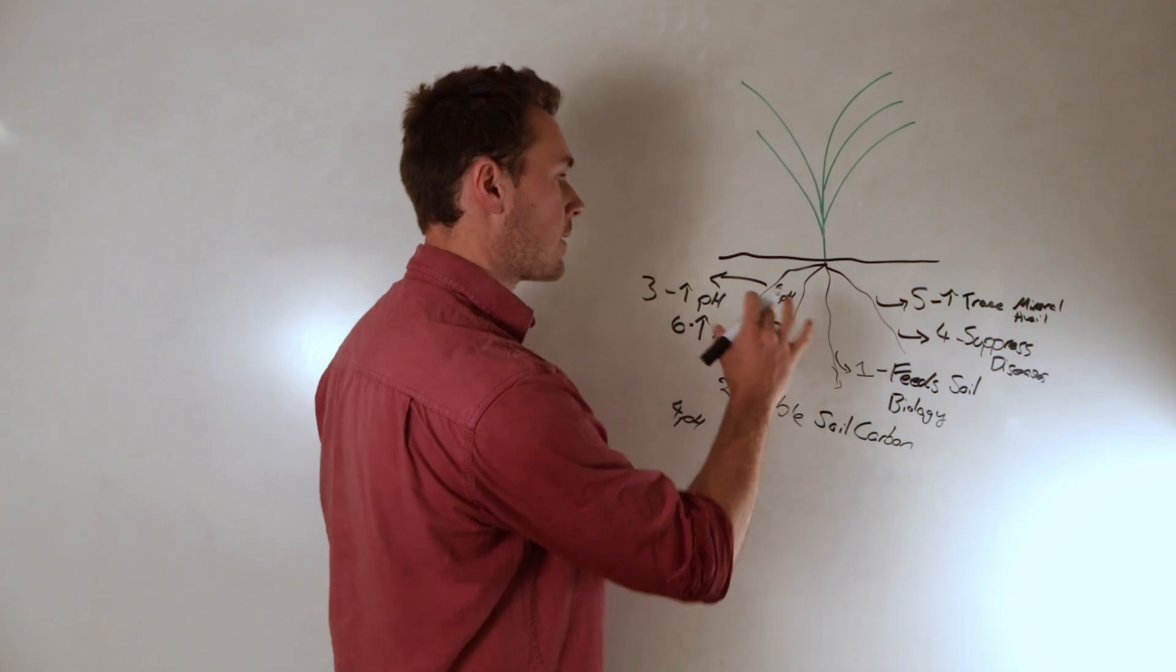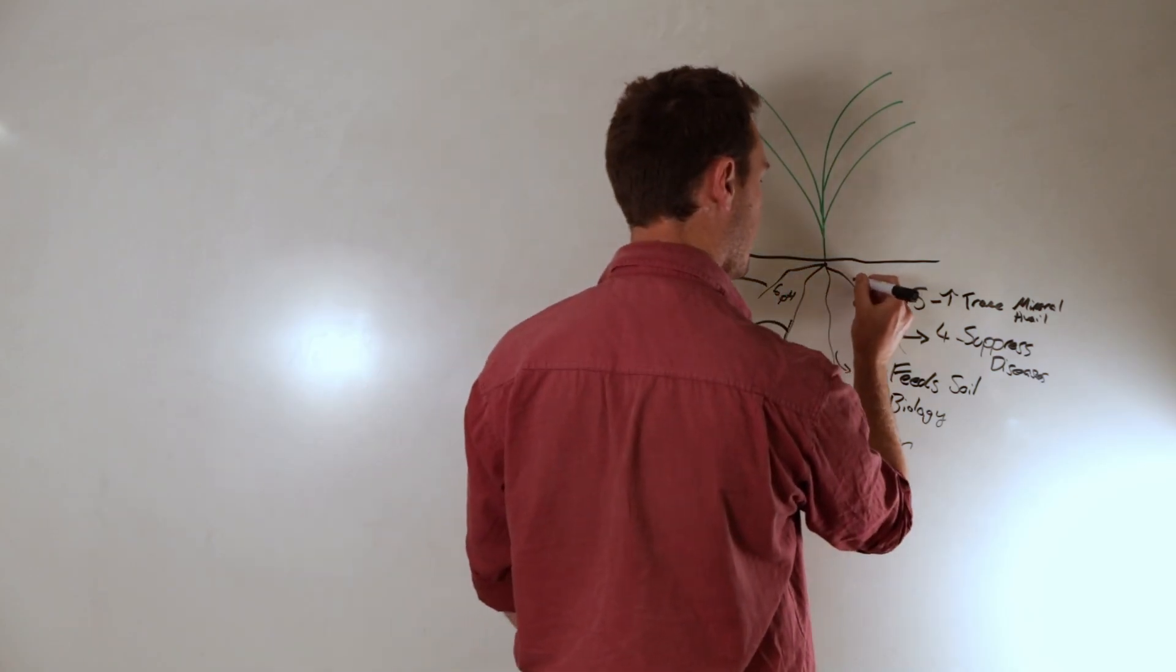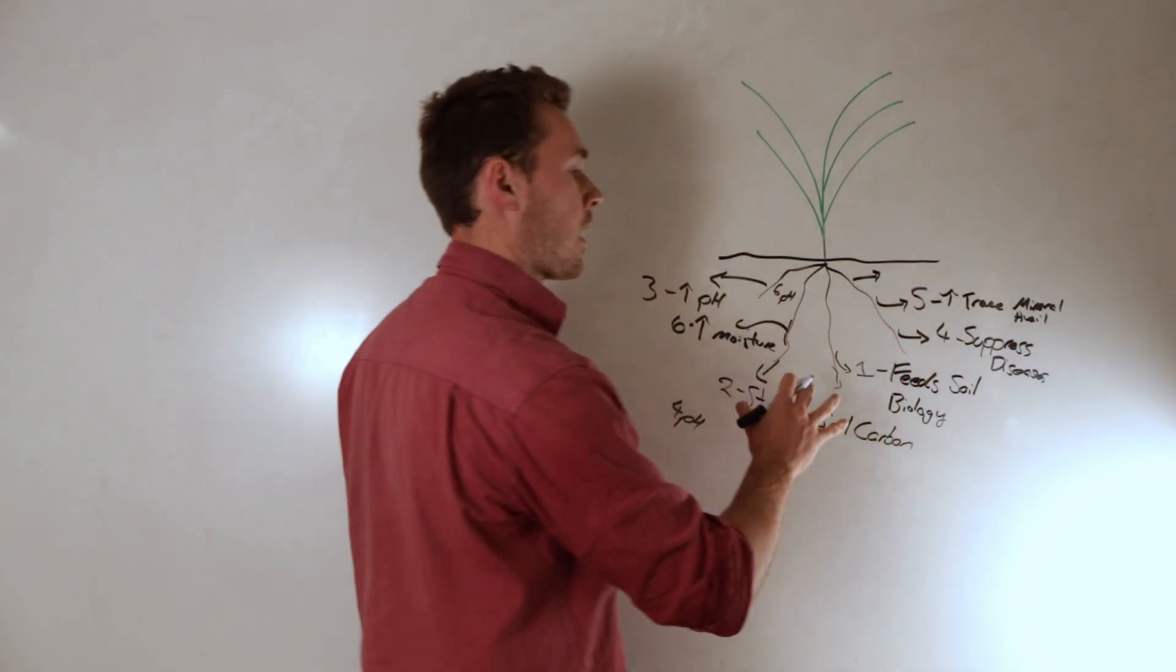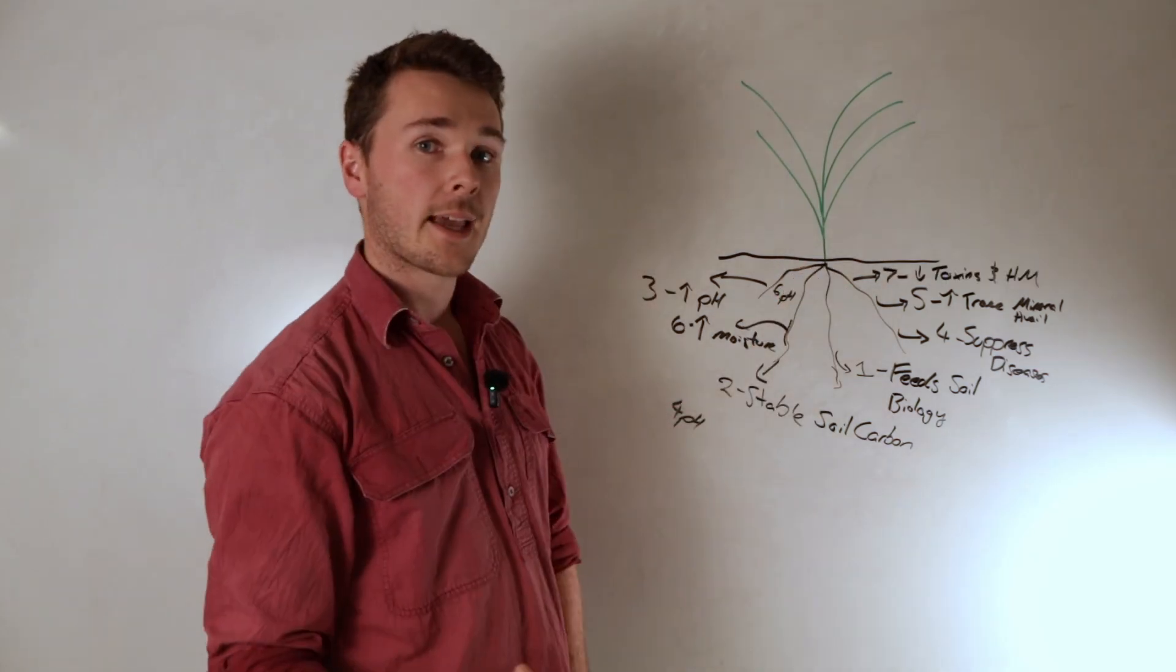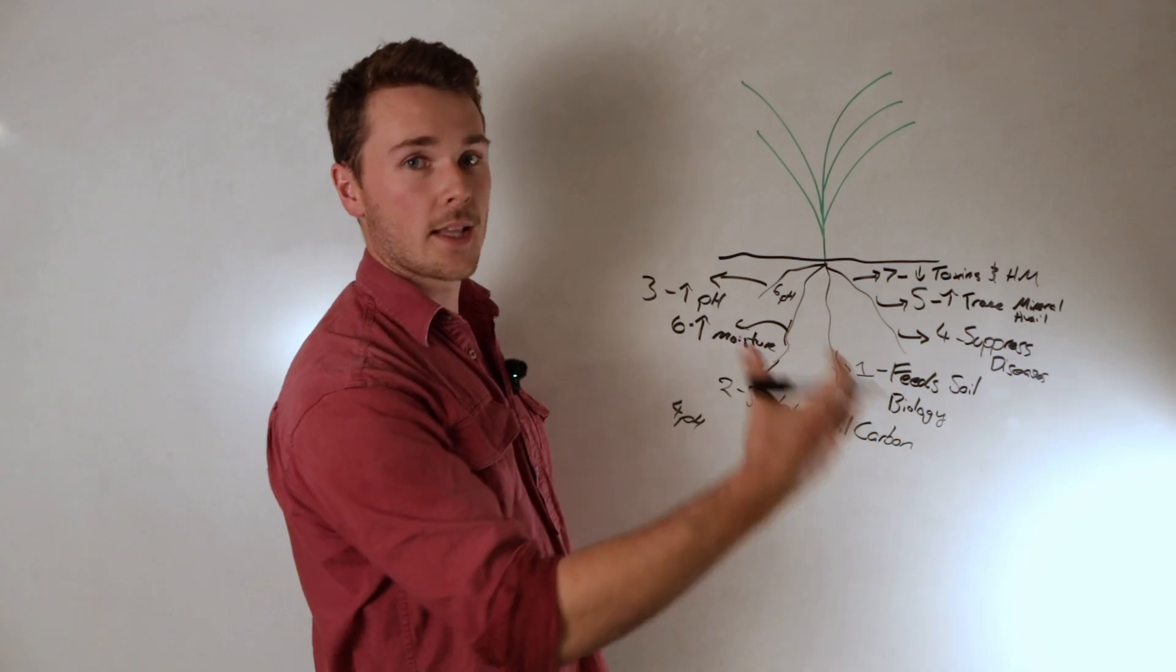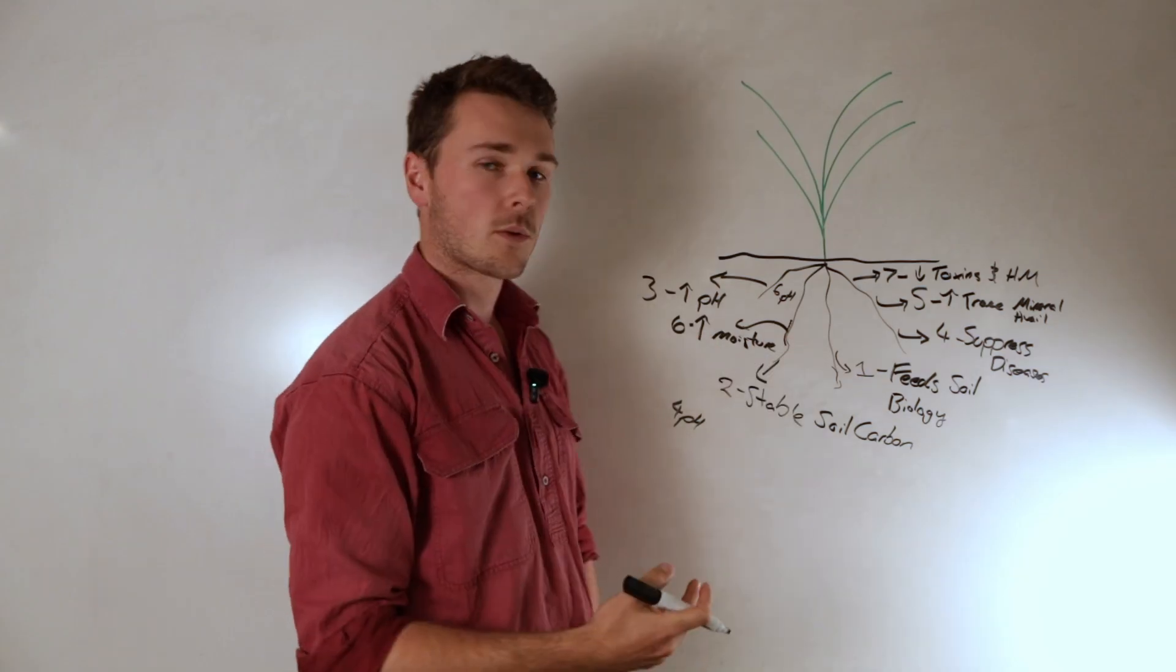The very last one is that these root exudates can also complex heavy metals and toxins and therefore reduce their availability to the plant. Obviously we don't want the plant taking up all these heavy metals for us to eat. It's not good for the plant, likewise with toxins.